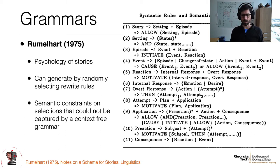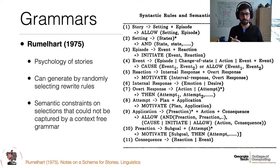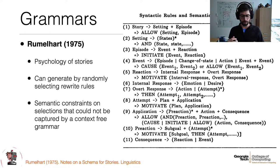What Rumelhart didn't tell us is how to implement in code something like 'motivate,' 'cause,' or 'initiate.' We'll have to resolve that particular problem. Notably, Rumelhart eventually stopped thinking about stories and went on to create the very famous backpropagation algorithm. So everything about neural nets that we think about today owes something to people starting by thinking about stories.